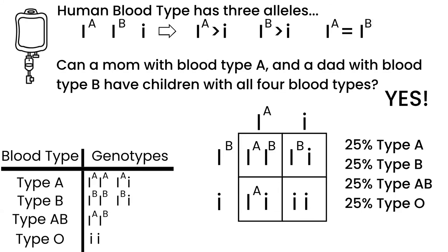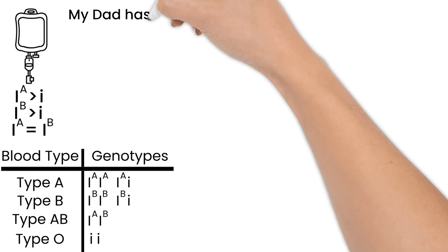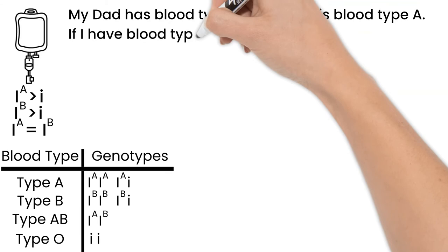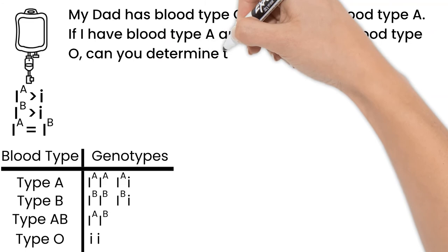We'll do one more quick question with blood type. My dad has type O blood. My mom is type A. If I have type A and I have a sister with type O, can you determine the genotypes of my parents and my sister and I?